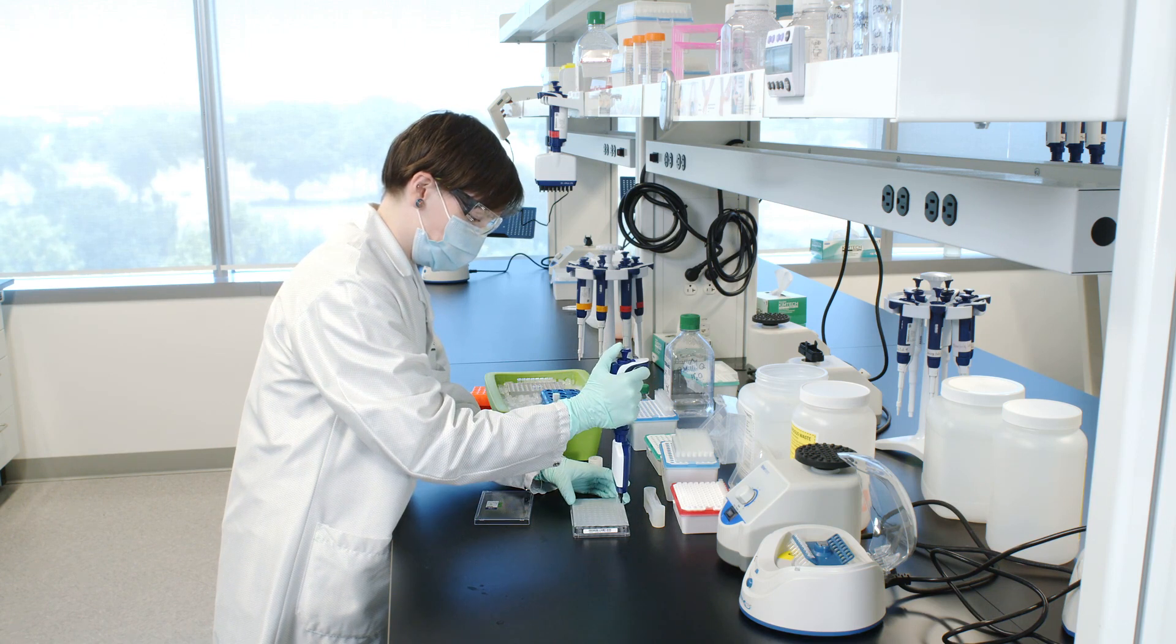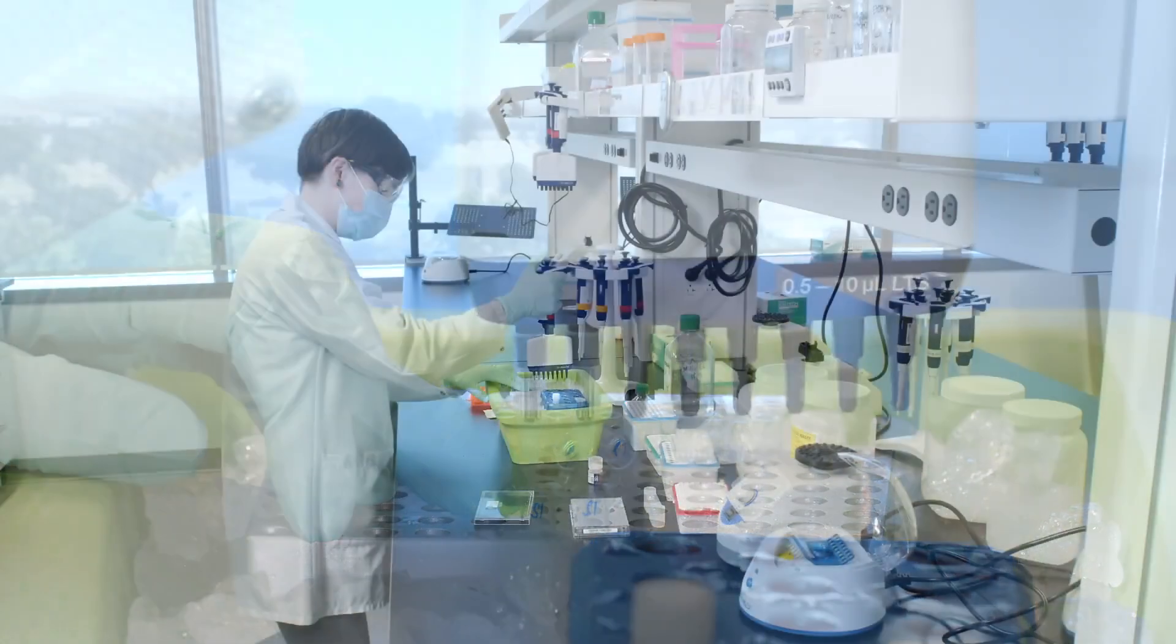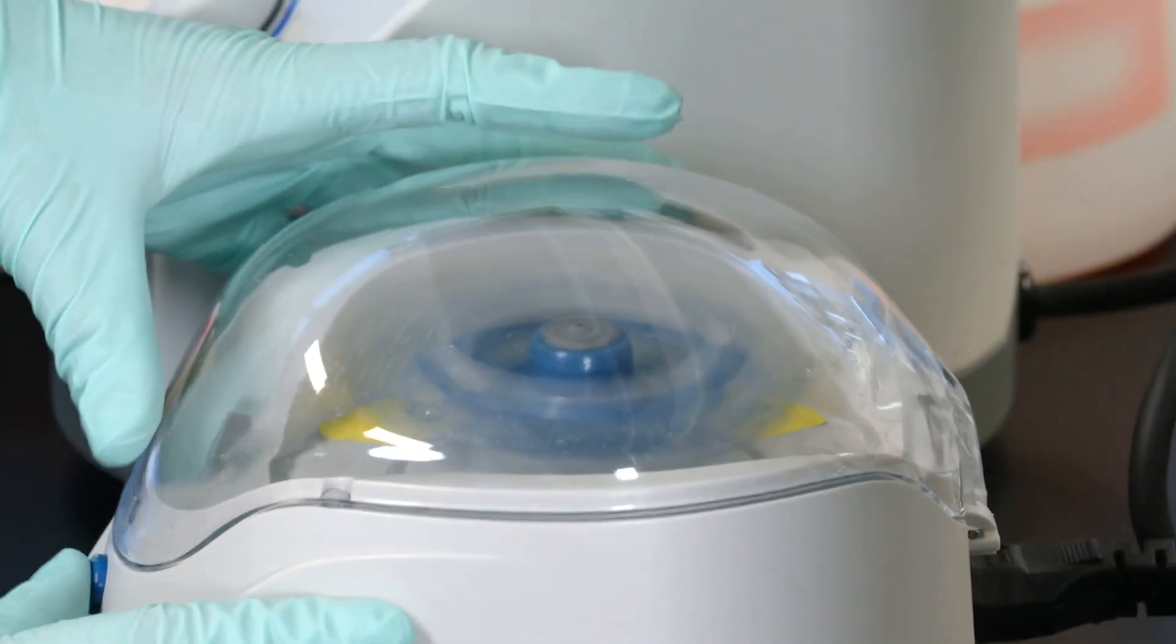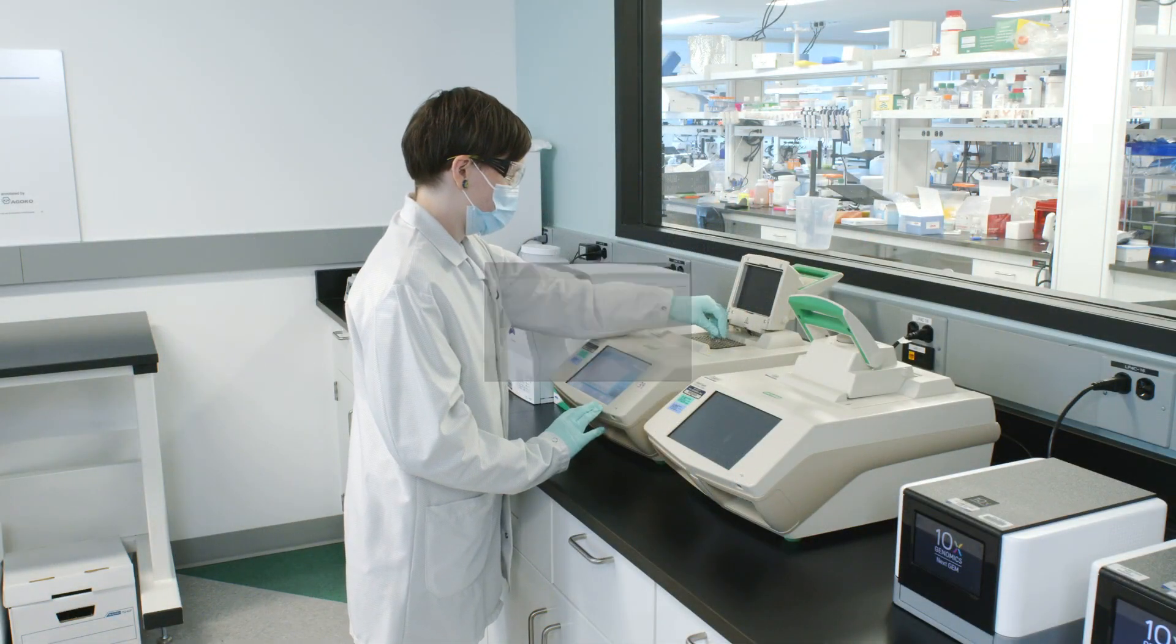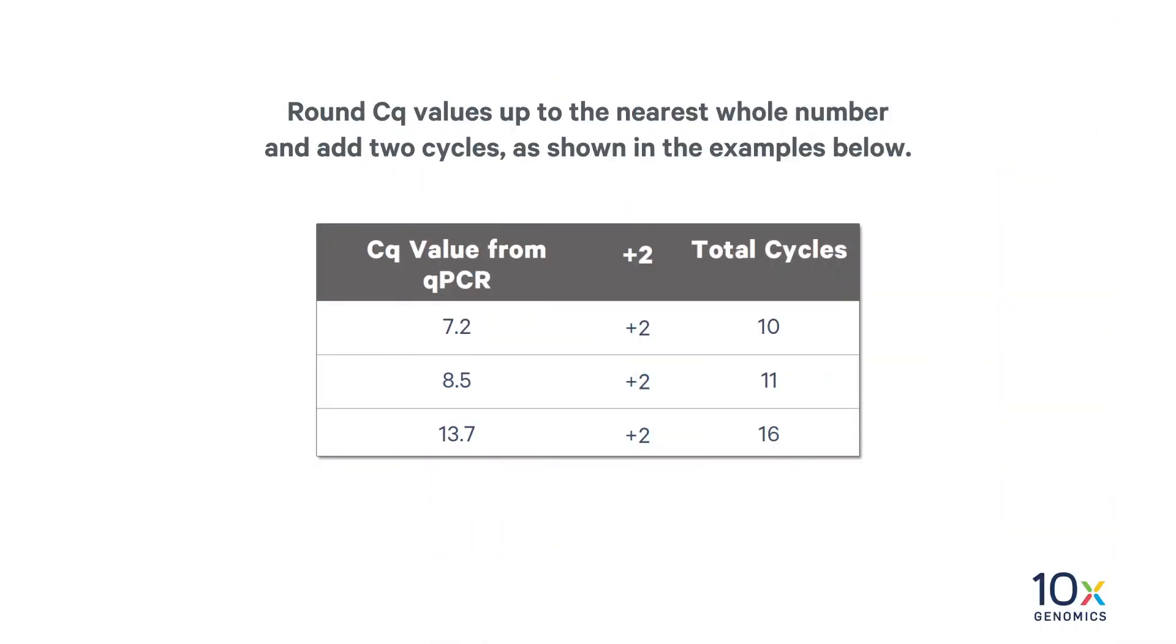Next, we'll perform the sample index PCR. Incubate in the thermal cycler with the following protocol. Round Cq values up to the nearest whole number and add two cycles as shown in the examples below.